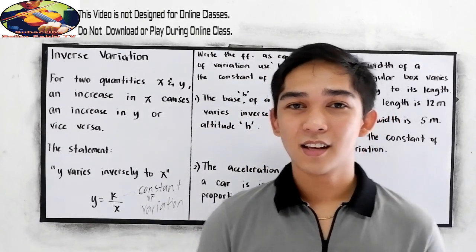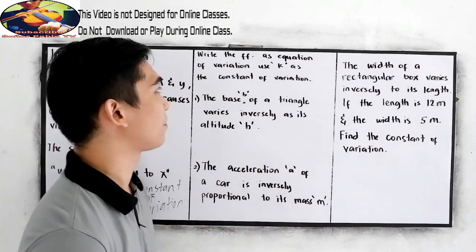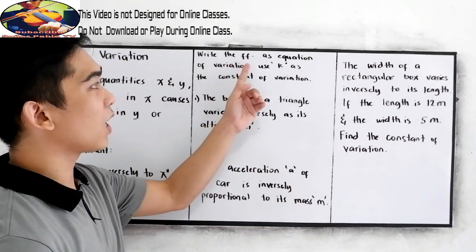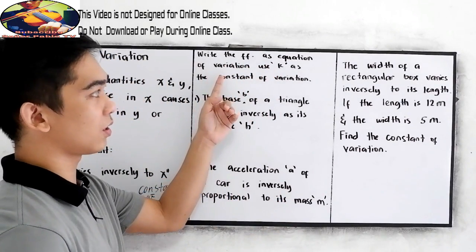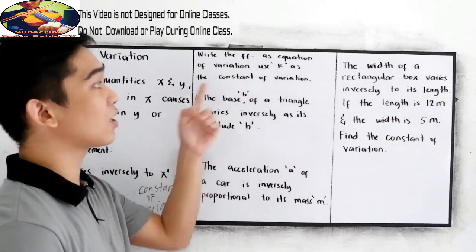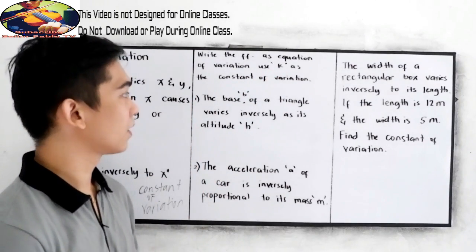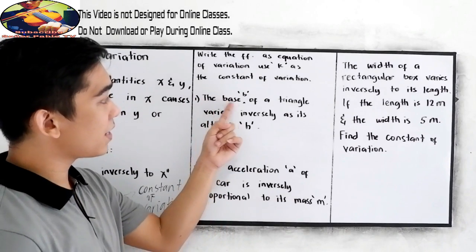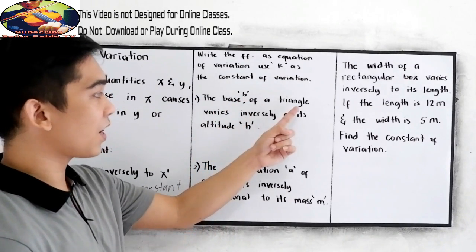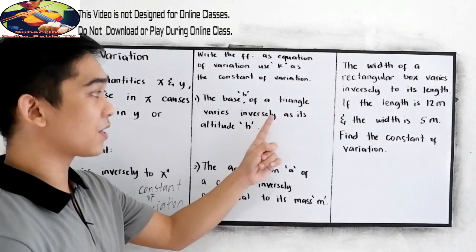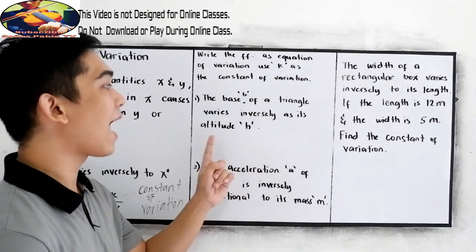Now, to better understand, let's have this problem. Write the following as equation of variation. Use K as the constant of variation. Number one, the base B of a triangle varies inversely at its altitude,